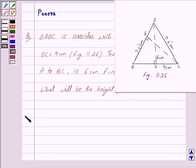Let us now begin with the solution. We are given AD = 6 cm and BC = 9 cm.